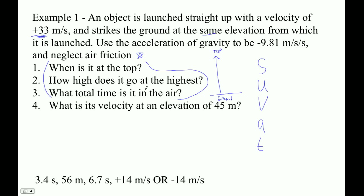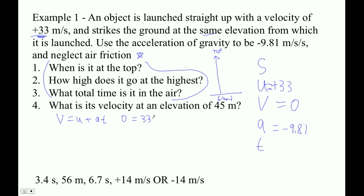Once we get the time to the top, we can double that, and that will give us the time in the air. At the top, the final velocity is zero because if it's not zero, it's not at the top. The initial velocity is positive 33. The acceleration is negative 9.81, which means the whole time it's going up it's slowing down. And then we want to find the time. So for the time I'm going to use v = u + at. So: 0 = 33 + (−9.81)t. That's just 33 divided by 9.81, and I get 3.3639. When is it at the top? With two sig figs, I have to say 3.4 seconds.